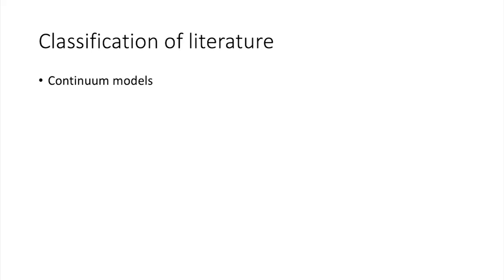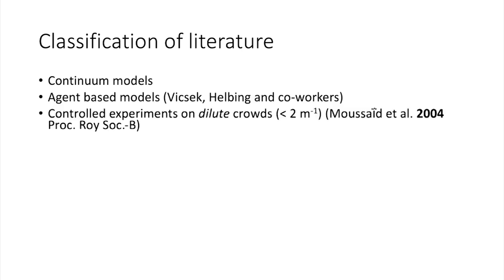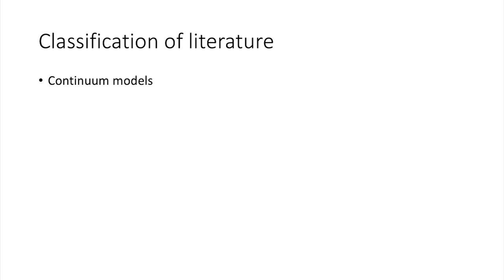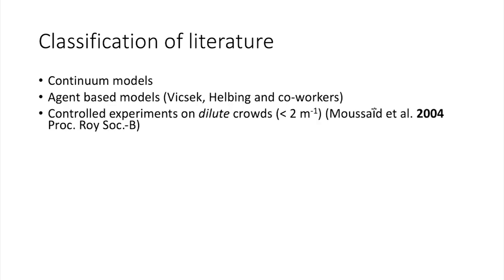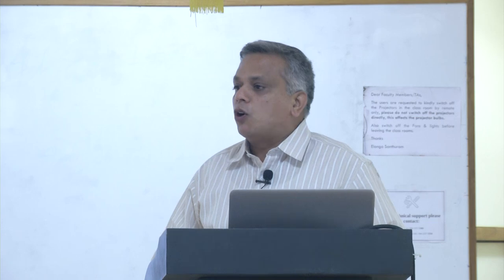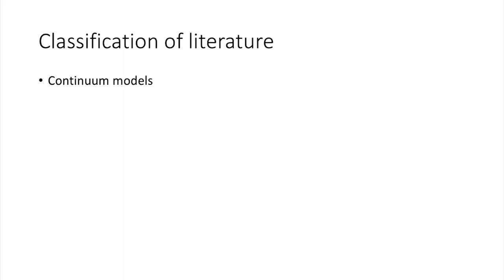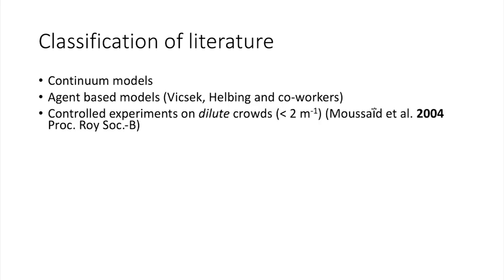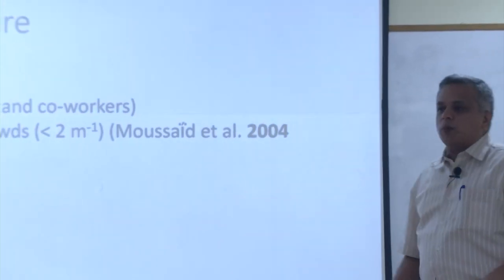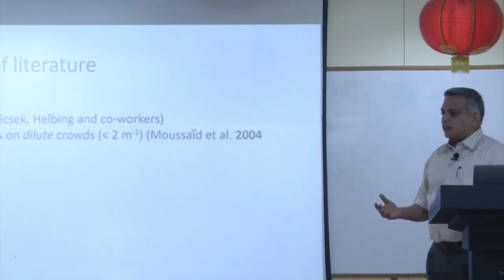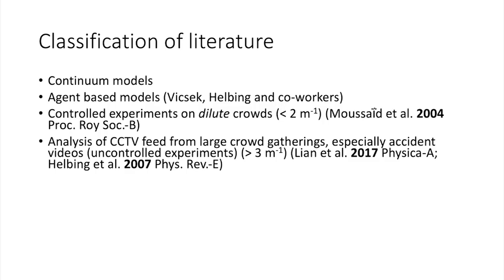Let us do a quick classification of the literature. Continuum models came before so-called agent-based models — the civil engineering community has looked at continuum models for traffic for a long time. Agent-based models are more recent. We will focus more on those, which started with Vicsek and Helbing, who were among the early people to look at agent-based models of human behavior. The body of work based on these models includes dilute crowd experiments, typically less than 2 people per square meter — the level at which you can get ethical clearance for real human experiments in a lab.